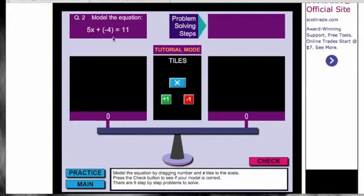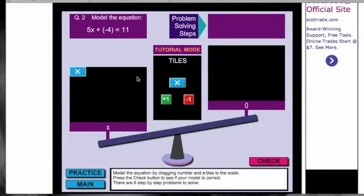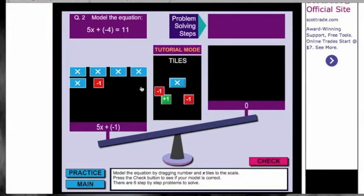So we have our original equation: 5x plus negative 4 equals 11. Now we're going to add 5 X's over to the box to the left to represent our 5x. Next we're going to put four of the negative 1 cubes into the box to complete the left side of the equation.